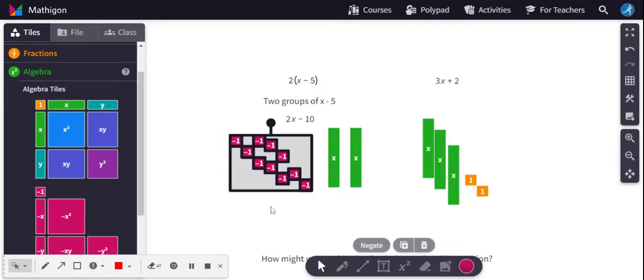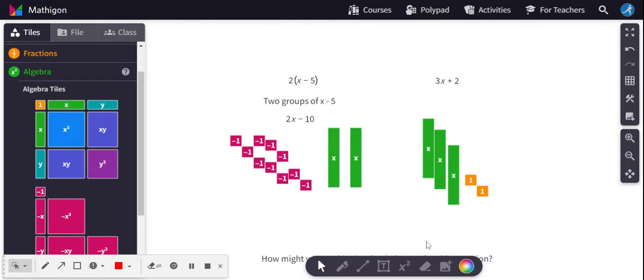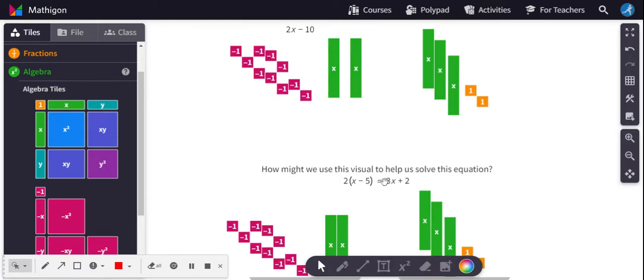That is 10 negative unit tiles. And over here on the right-hand side, you can see three x tiles and the two positive tiles, or positive unit tiles. So, the question now is, how do I take that visual model, that representation of the groups, and how do I use it to solve this equation?